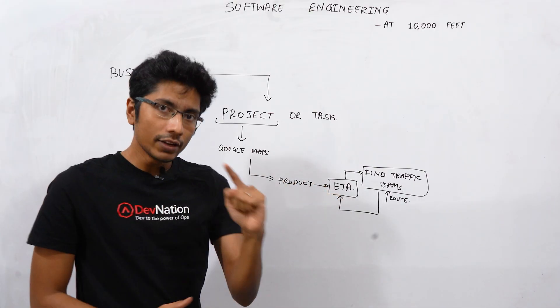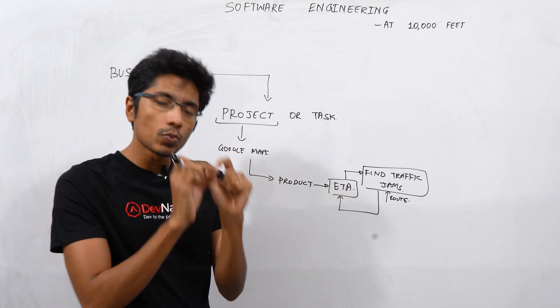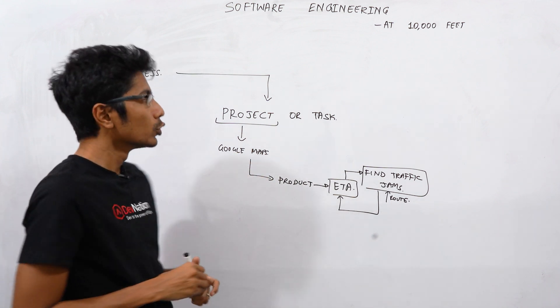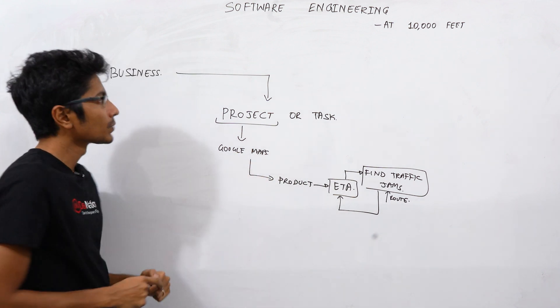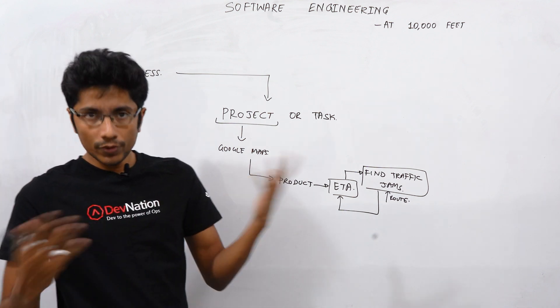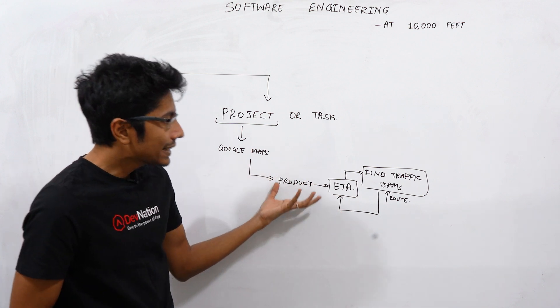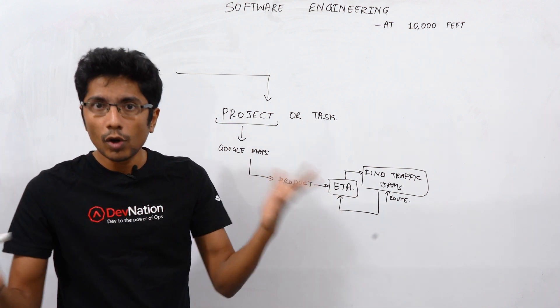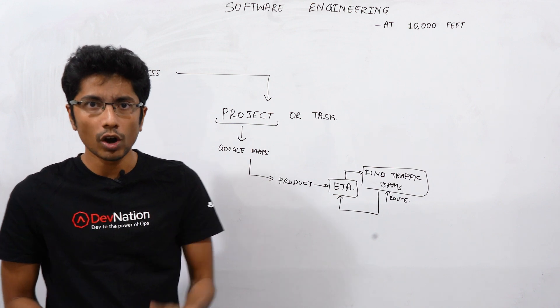And you, an individual engineer, are going to be looking at one small component of that project. This is usually how things work in a large company. In a small company or a startup, what happens is you are part of a team again, but the team is working on the entire product. A startup usually has just one product.